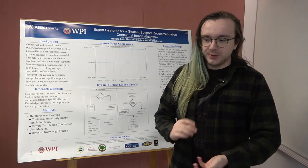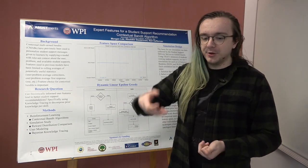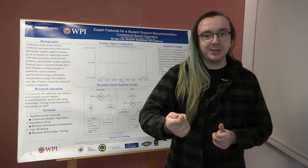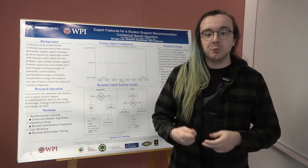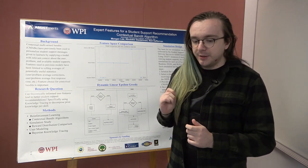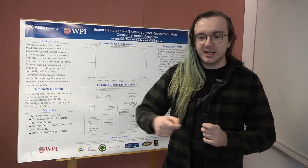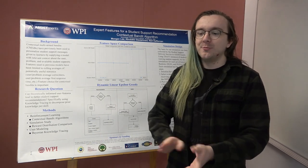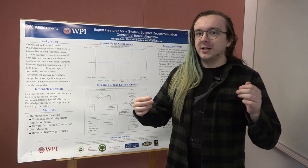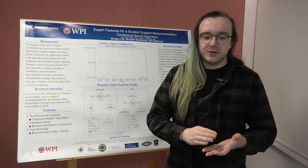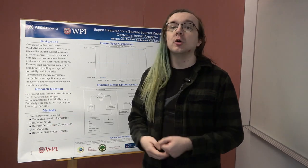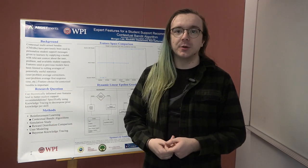Putting it back in the jackpot example for a second, the different arms that we can pull are different hints or explanations that we can give to the student. What we want to do is give students the hints and explanations that are more likely to have the student learn. We measure that by whether or not the student looks at a hint and then gets the next problem in whatever homework assignment they're doing correct.